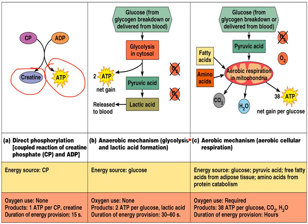Then we have glycolysis and lactic acid fermentation. This type of metabolism is anaerobic — it does not need oxygen. It starts with glucose, and basically a cell takes a molecule of glucose, which is six carbons long, and it breaks it in half, then manipulates the two halves. It can make a little bit of ATP,